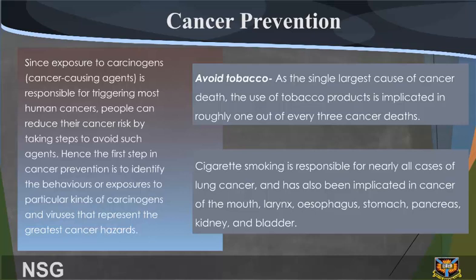Cancer Prevention. Since exposure to carcinogens — cancer-causing agents — is responsible for triggering most human cancers, people can reduce their cancer risk by taking steps to avoid such agents. Hence, the first step in cancer prevention is to identify the behaviors or exposures to particular kinds of carcinogens and viruses that represent the greatest cancer hazards.